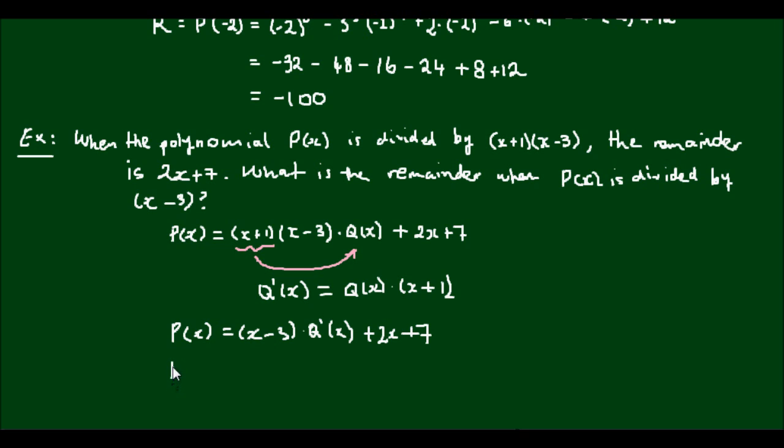So now that I have an expression for P of X, I can use my remainder theorem that R is equal to P evaluated at the constant of the divisor, 3. So that is equal to 3 minus 3 times Q prime of 3 plus 2 times 3 plus 7. Well, the front term is going to go to 0, which leaves us with 2 times 3 is equal to 6 plus 7, which is equal to 13.